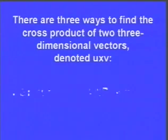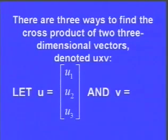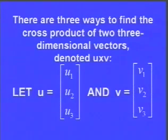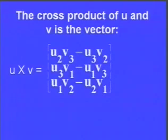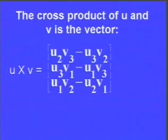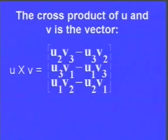One way to find the cross product is to memorize a formula. If u is (u1, u2, u3) and v is (v1, v2, v3), then u cross v is the vector (u2·v3 − u3·v2, u3·v1 − u1·v3, u1·v2 − u2·v1). You can memorize that, but as you can see, it's tough to say, so it was tough to memorize when I was a student. There are other ways.